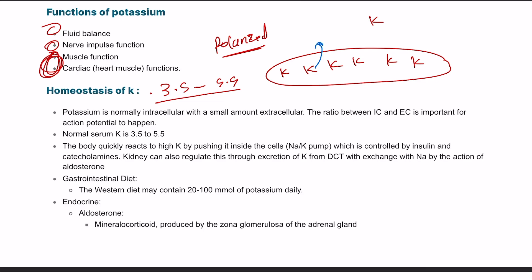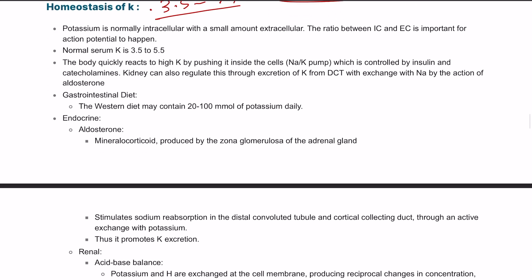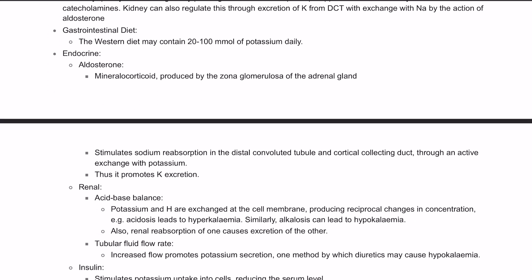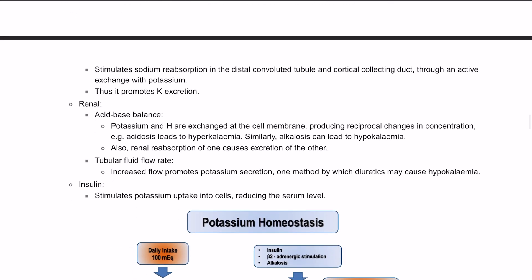Potassium levels can be regulated through the production of certain hormones. One of these is insulin, which is responsible for pushing potassium into the cell. That is why in cases of hyperkalemia — increased potassium level — we usually give insulin to push potassium inside the cell. That is also why in diabetic ketoacidosis, we give the patient potassium-containing fluid in addition to insulin, because otherwise the patient can develop significant hypokalemia.